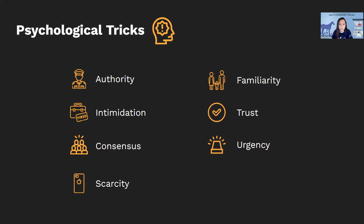Next we have consensus, which is using the influence of others — for example, claiming that a coworker usually provides some information but they are unreachable, so asking for that information wouldn't seem out of hand. Next we have scarcity, which is adding a time element to a phishing attack — more of a limited-time offer. This is different from urgency, which we'll cover later.